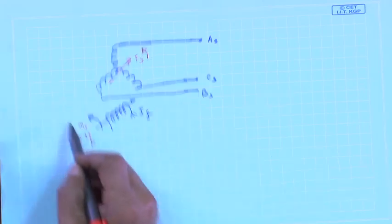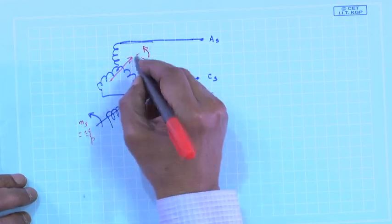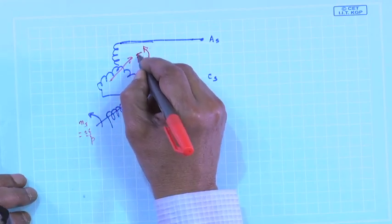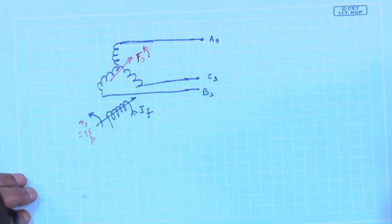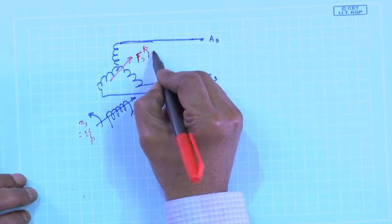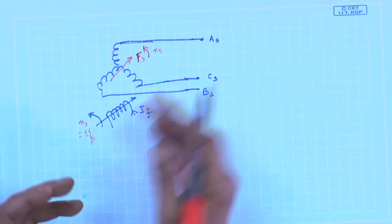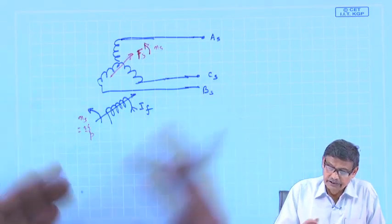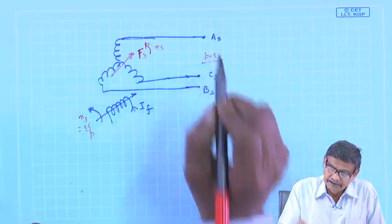Therefore, both fields — the rotor field as well as the stator field — will be moving with synchronous speed ns. The machine will be able to develop torque and the machine is said to be synchronized with the bus.